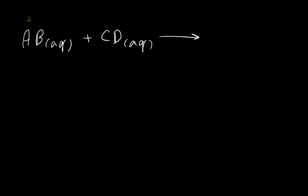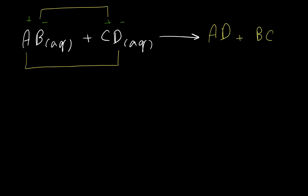Let's say A is the cation and B is the anion, C is the cation and D is the anion. To predict the product, we should switch the cations and write the product between A and D, and also write the product between B and C. So our product should be AD plus BC. To know if the products are soluble in water and aqueous, or if they are producing a solid, we should refer to the solubility chart.